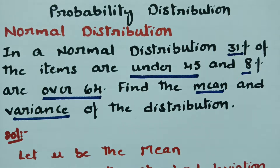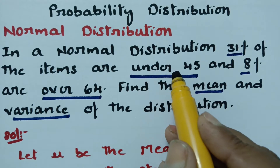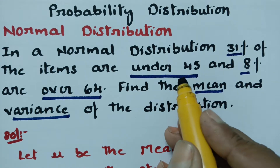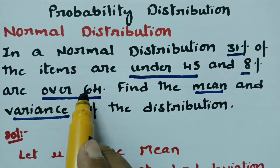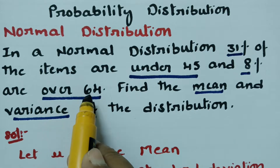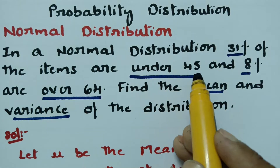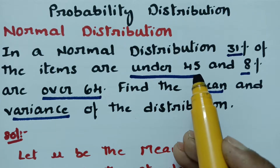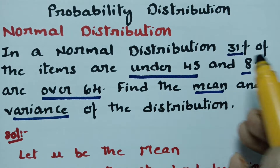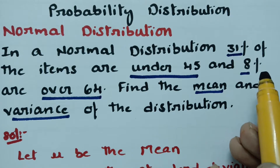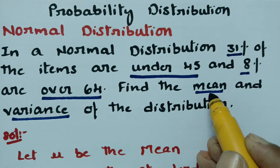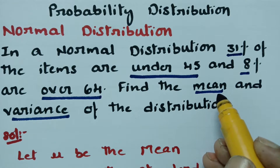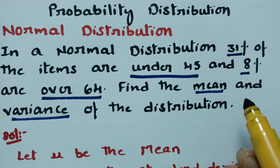What is given: 31% of the items are under 45 — under 45 means we take the region on the left side of the ordinate — and 8% are over 64, plotted on the right side of the ordinate. When a percentage is given, we treat it as a probability, and we need to find the variables: mean (mu) and variance (sigma squared).